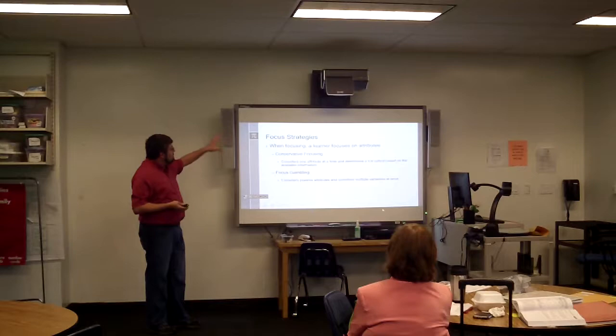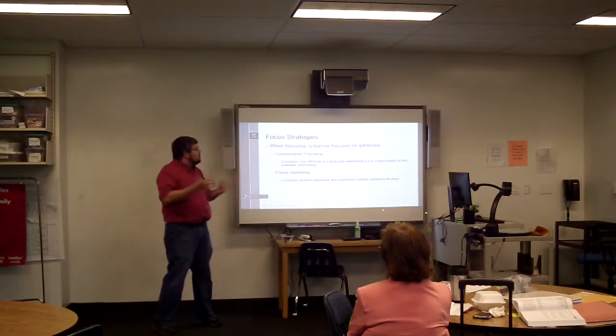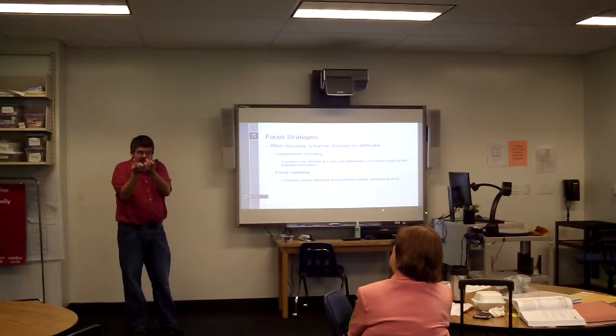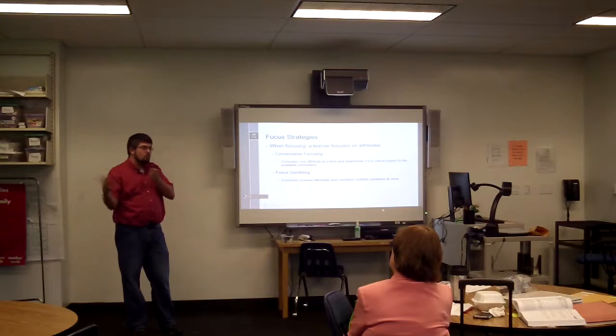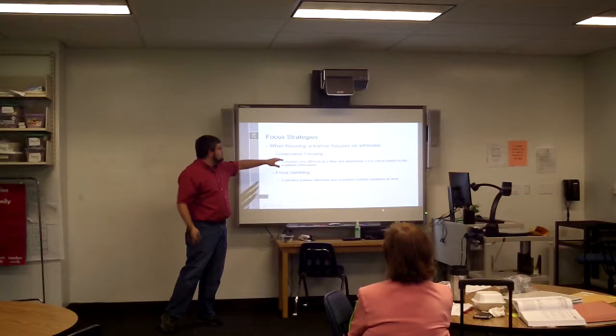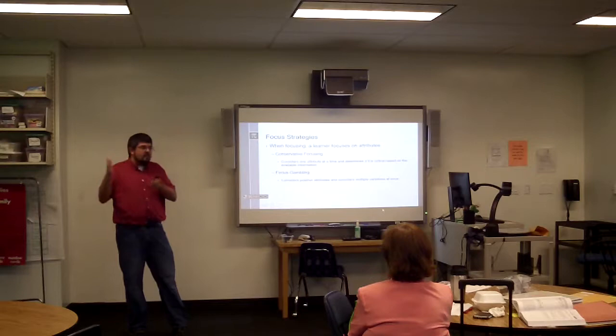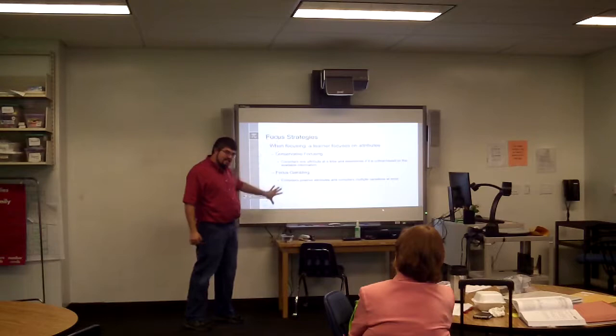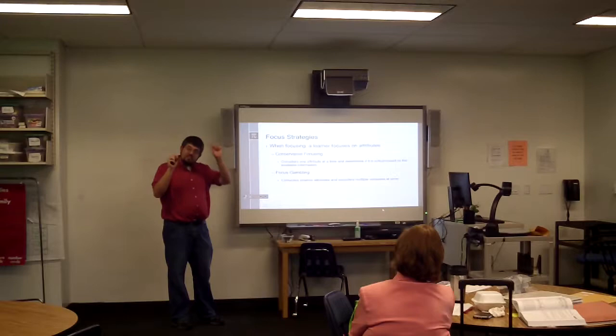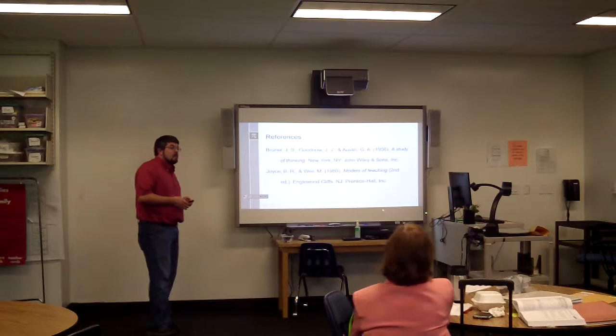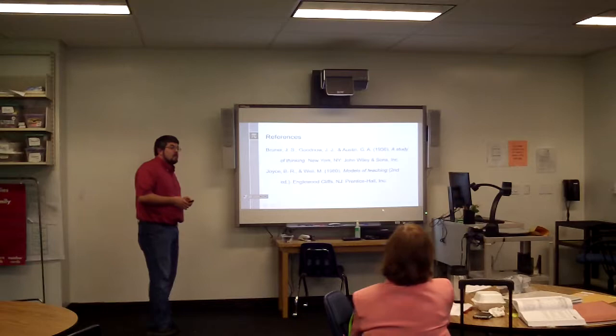In terms of focusing, when you're doing any kind of focus, a learner is focusing on the attributes specifically — considering them and saying, these attributes are similar. Does it have to have all of these? What may be the range of values? A person exhibiting conservative focusing is considering only one attribute at a time, whereas focused gambling involves multiple attributes at once. They would be looking at the positive cases, focusing on the 'yes' examples, seeing how they're related, and saying they all have this and this and this. So the process is always yes or no — you need exemplars and non-exemplars.